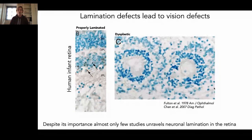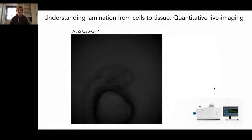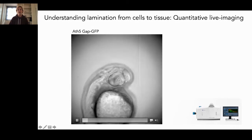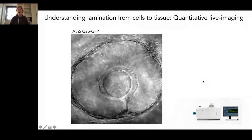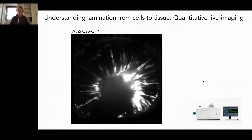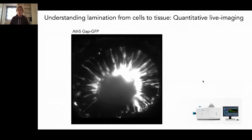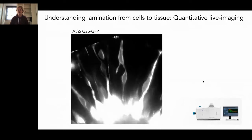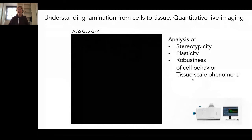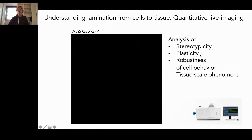This is what my lab tries to figure out in many different projects. The way we do this is by using a lot of imaging — mainly long-term light sheet imaging. This is an example from one of our first studies where we looked at retinal ganglion cells. The zebrafish is a fantastic model organism because it allows us to zoom in at the single cell level. What we get out is an analysis of the stereotypicity and plasticity of the processes, and we can also look at tissue scale phenomena by imaging the whole process from beginning to end.